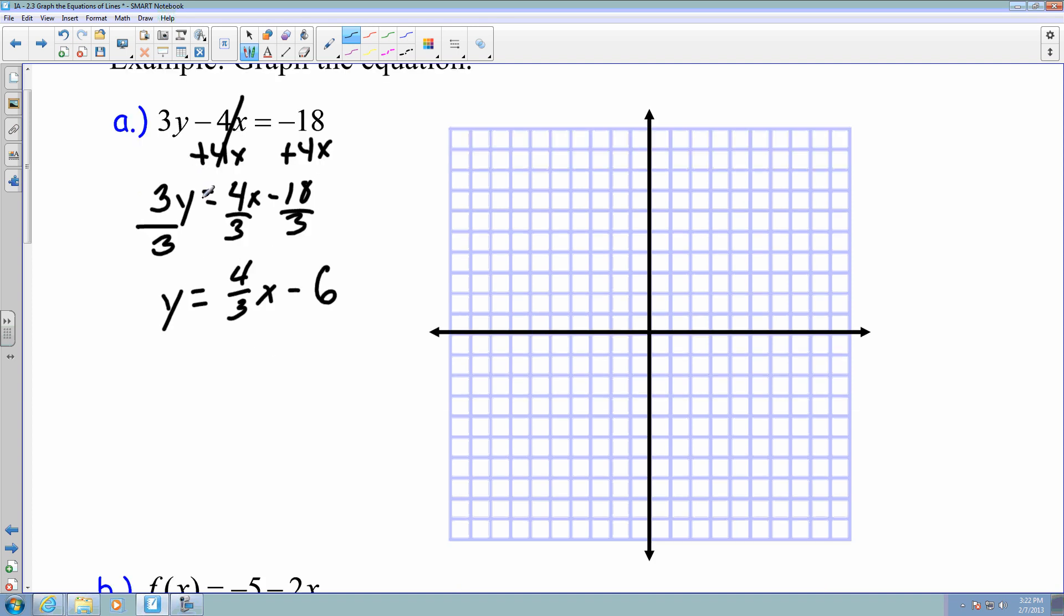So our y-intercept is negative 6, so I have to go down to 0, negative 6. 1, 2, 3, 4, 5, 6. Plot that point.